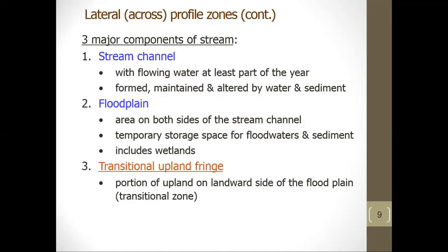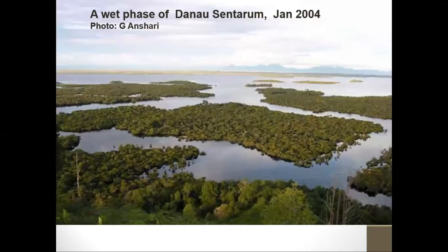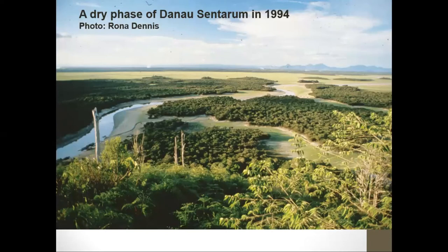In many river corridors, a more complex assortment of features can be seen. For example, the floodplain may be seasonally inundated and include features such as floodplain forests, emergent marshes, and wet meadows. The transitional upland fringe may include upland forest and hill prairie. Landforms such as natural levees are created by erosion and sedimentation, primarily during floods. The wet face of Danau Centaurum in January 2004 versus its dry face in 1994 illustrates how areas, especially floodplain areas, are submerged during the wet season while the main channel remains visible in the dry season.